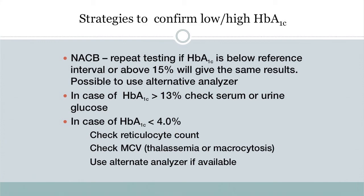When A1c is low — less than 4% — we check the reticulocyte count to see if it is elevated, or whether the MCV is elevated. In patients with beta-thalassemia, the A1c will be about 0.4% lower than a similar patient with the same glycemic control, due to increased red cell turnover. It is useful to examine CBC results to help explain why A1c is high or low.